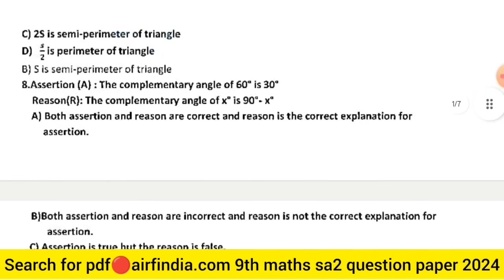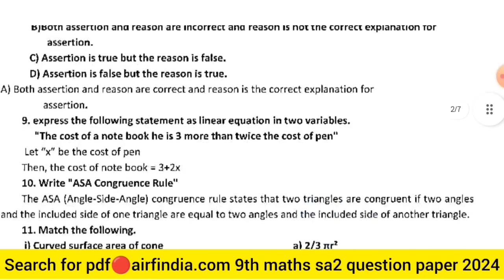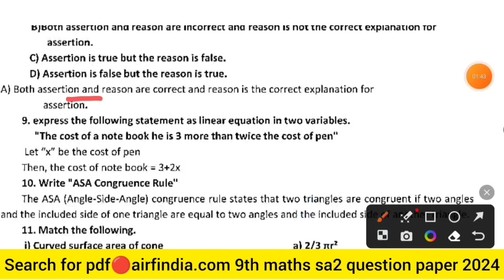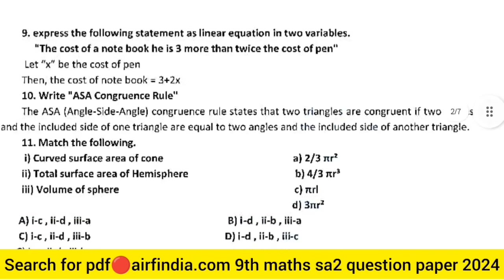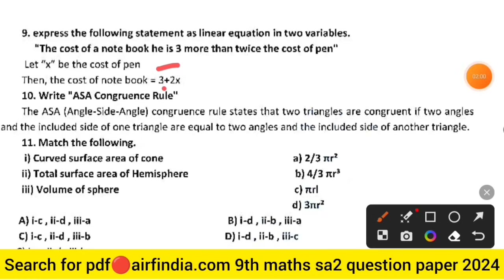Question 7: in Heron's formula, which of the following is correct — the right answer is that 's' is the semi-perimeter of the triangle, option B is correct. Question 8: assertion and reason — the right answer is option A: both assertion and reason are correct, and reason is the correct explanation for assertion. Question 9: express the statement as a linear equation in two variables — the cost of a notebook is three more than twice the cost of a pen. Let x be the cost of a pen; then cost of notebook = 2x + 3.